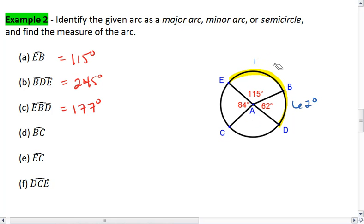Let's look at arc BC. Arc BC is going to be the shorter distance from B to C, which will be 62 degrees plus 99 degrees. Adding those together, I get 161 degrees.